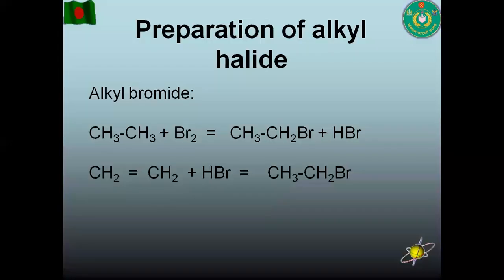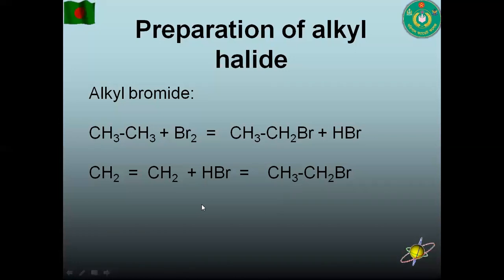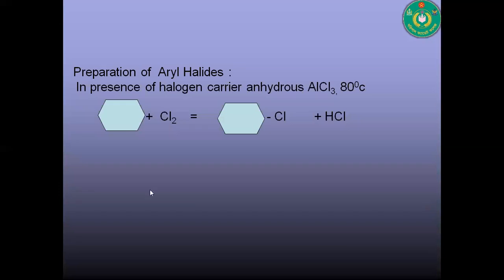Alkyl bromide preparation: alkene reacts with bromine or hydrogen bromide to form alkyl bromide, following Markovnikov's rule. In this reaction, a hydrogen atom is replaced by a bromine atom to give ethyl bromide. For aryl halides: benzene reacts with chlorine to form benzyl chloride — this is a chlorination reaction.